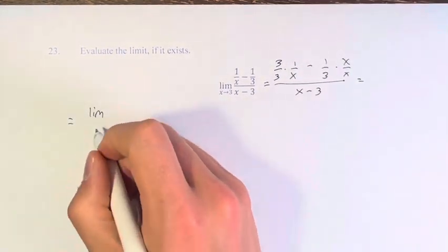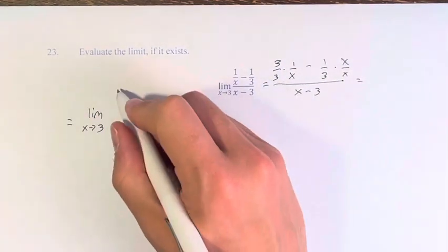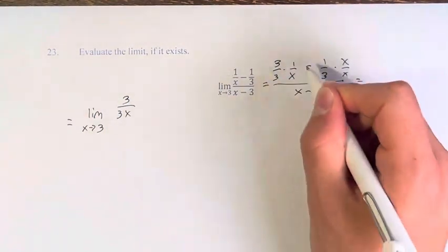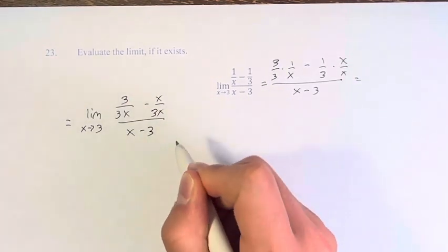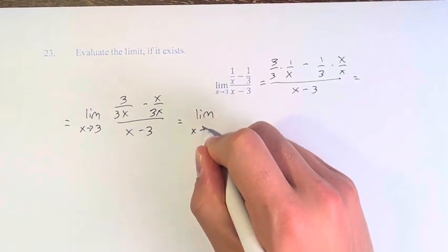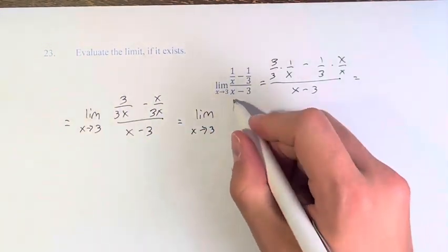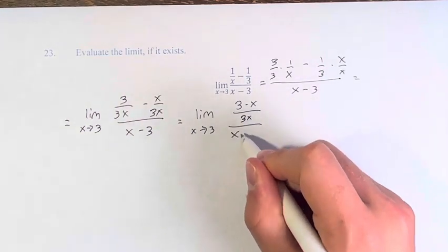And what this gives us is 3 over 3x minus x over 3x divided by x minus 3. And now that they have the same denominator, you can subtract the numerators to get 3 minus x over 3x over x minus 3.